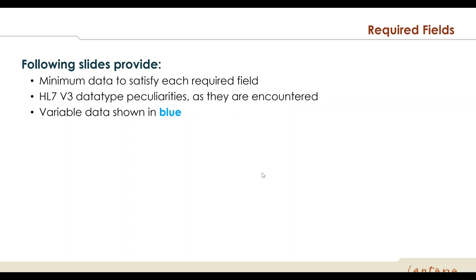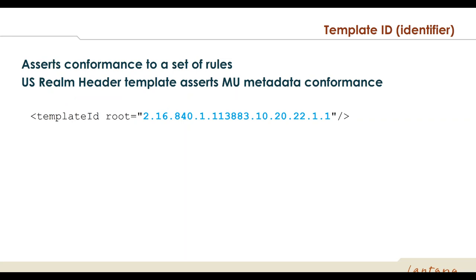On the following slides, we'll show the minimum data necessary to satisfy each required field. We'll introduce HL7 version 3 data types and terminology and tooling as they are encountered, so you'll have real-time information to address questions when you see things like Object Identifiers or OIDs on screen. Variable data is shown in blue — data that you would populate with your own information. Software developers can almost pick up the XML fragments and use them directly in applications, but anything highlighted in blue should be replaced with your own data, such as your patient's name or gender.